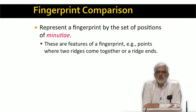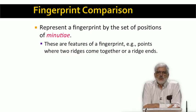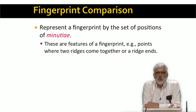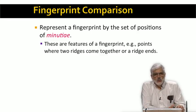An image of a fingerprint is examined for what are called minutiae. These are particular locations where something interesting happens to the ridges that form a fingerprint. Examples are where two ridges merge into one, or where a ridge ends. So the image of a fingerprint is replaced by a set of coordinates in a two-dimensional space where minutiae are located.